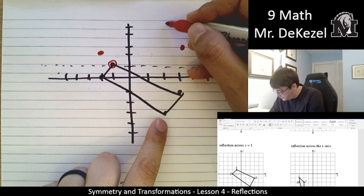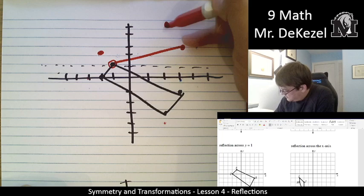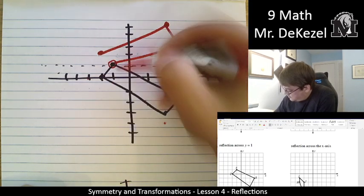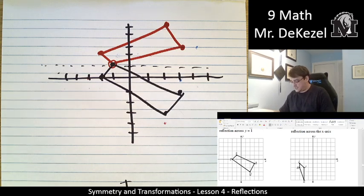That's 1, 2, 3, 4. That's up here. So we can go ahead and we can connect our dots. We should have the same shape flipped over that y equals one line. Let's do one more.